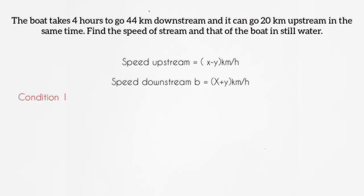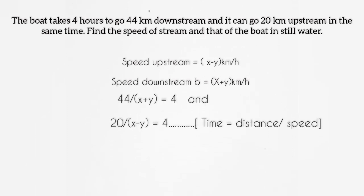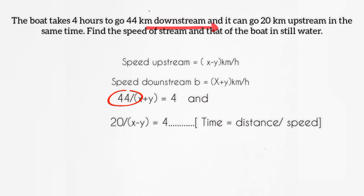According to the given condition we have 44 upon x plus y is equal to 4. Why we had taken x plus y? Because 44 is the distance for downstream. That's why 44 upon x plus y is equal to 4.